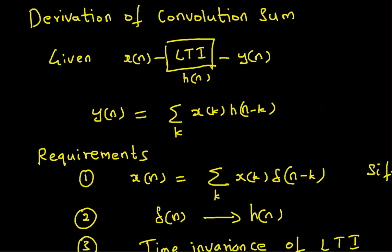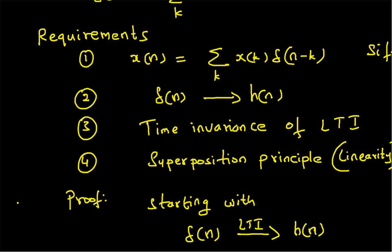To summarize, we have derived the convolution sum for a discrete LTI system. Given input x(n), the output y(n) equals the summation over k of x(k) multiplied by h(n minus k) — in other words, y(n) is a linear combination of shifted values of h(n). To derive this, we needed four requirements: the shifting property, the definition of impulse response, the time invariance property, and the superposition principle.